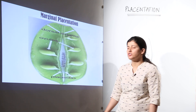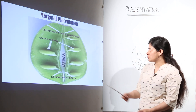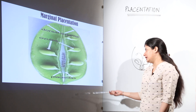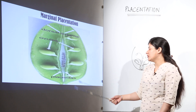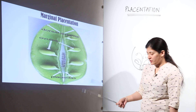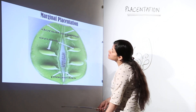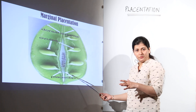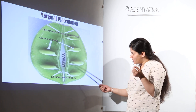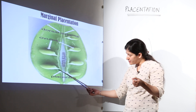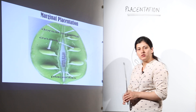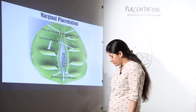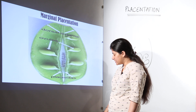Let us see each type one by one. For marginal placentation, the simplest example is that of a pea. This is the pod of the pea, and here we have the placenta — these are the ovules which will further grow and become seeds. This is what you have to remember in marginal placentation.